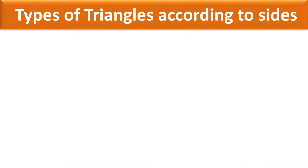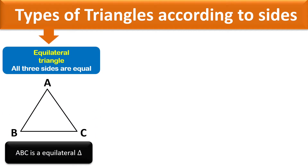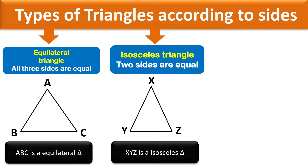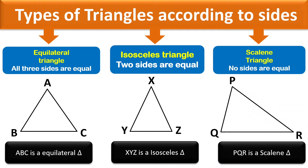Types of triangles according to size. The first is the equilateral triangle — a triangle whose three sides are equal, as you can see with triangle ABC. Next is the isosceles triangle, where two sides are of the same length — as you can see, XY and XZ are of the same length.